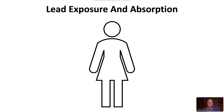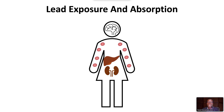After absorption, lead is distributed to the blood and soft tissues, including the brain, liver, and kidneys. Lead is also distributed in the bones, where it is found in the bone marrow. Bones contain up to 95% of the body's burden of lead, with a half-life of decades.